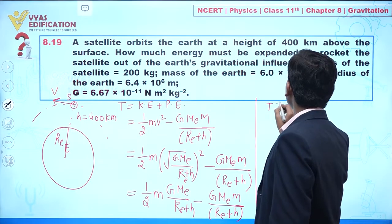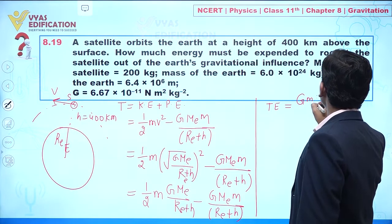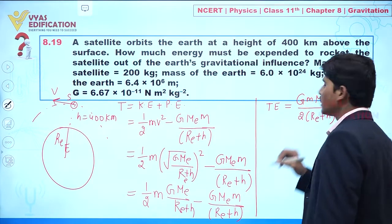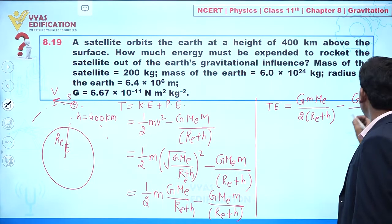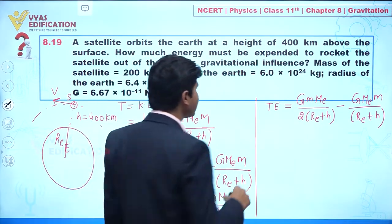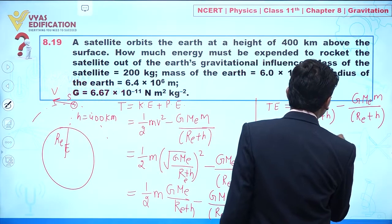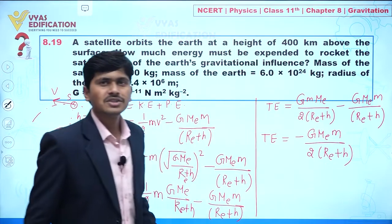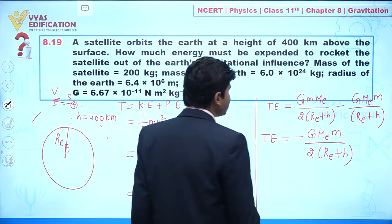The expression for total energy simplifies to G·Me·m divided by 2(Re + h), minus G·Me·m divided by (Re + h). From here, total energy equals minus G·Me·m divided by (Re + h).